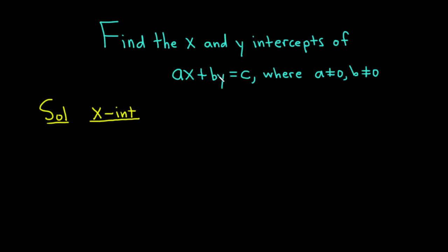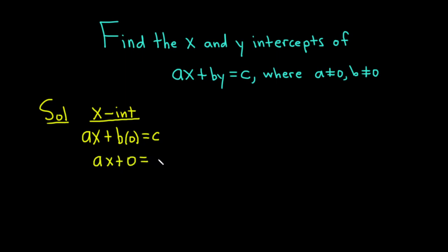So we're looking for the x-intercept. We're going to put a zero where the y is. I'm going to write down this equation one more time, except instead of y, I'm going to put a zero there. So we have ax plus b times zero, and this is equal to c. b times zero is zero, so this becomes ax plus zero equals c. So we have ax equal to c, because ax plus zero is just ax. Because a is not zero, we can divide by it, so we have x equals c over a.